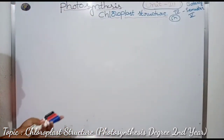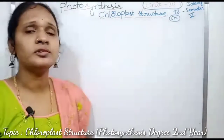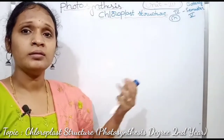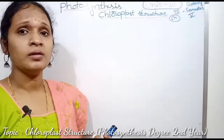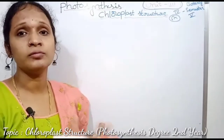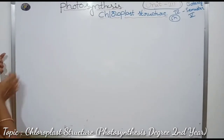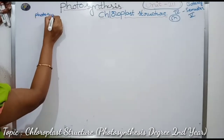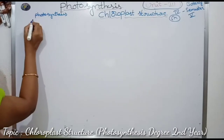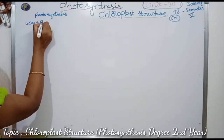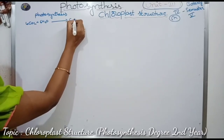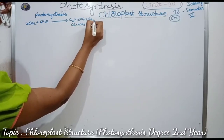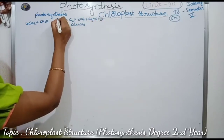First we will go over the definition of photosynthesis. What is photosynthesis? Everybody knows what photosynthesis is. Photosynthesis means it utilizes sunlight and takes CO2 and water to form carbohydrates or glucose, and releases O2. The equation is: 6CO2 + 6H2O gives rise to C6H12O6, which is glucose or carbohydrates, and it releases 6O2 and 6H2O in the presence of chlorophyll.